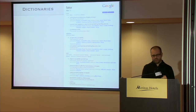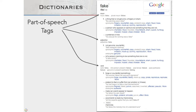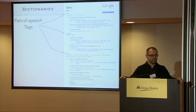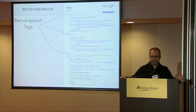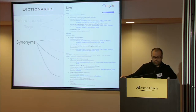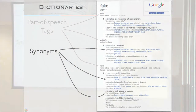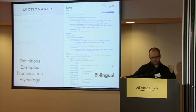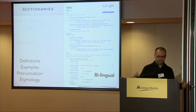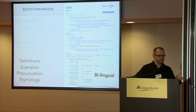Dictionaries have a lot of information; I'll only use a small subset. For part-of-speech tagging, I'll use the fact that most dictionaries break words down by the part-of-speech tags they can take, with example senses. For sentiment analysis, I'll use synonyms from thesauri, WordNet, and similar resources — also antonyms, which can be quite useful. Dictionaries also provide definitions, examples, pronunciation, etymology, and bilingual information. I'll briefly touch on how bilingual dictionaries can be used for language technology beyond the obvious translation applications, but I'll leave most of these as future work.